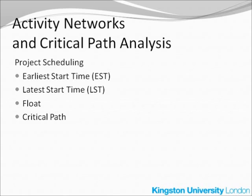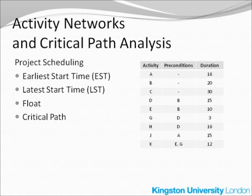To draw the activity network of the project, we need a list of all the activities. You can see them here, labelled from A to K. We usually don't use the label I because it would be a bit confusing with J. For each activity, we determine the preconditions, or the set of other activities that must be completed before the given activity can start. As you can see, there are no preconditions for activities A, B, and C, meaning these activities can start immediately after the project initiation.